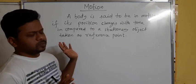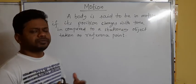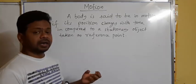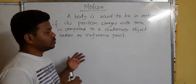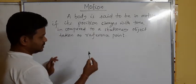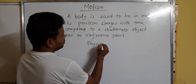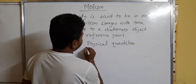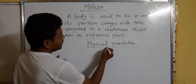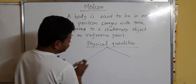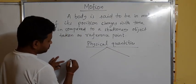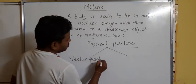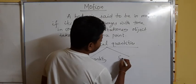In physics, we use physical quantities such as mass, weight, and distance. All physical quantities are divided into two categories: one is called vector quantity and the other is called scalar quantity.